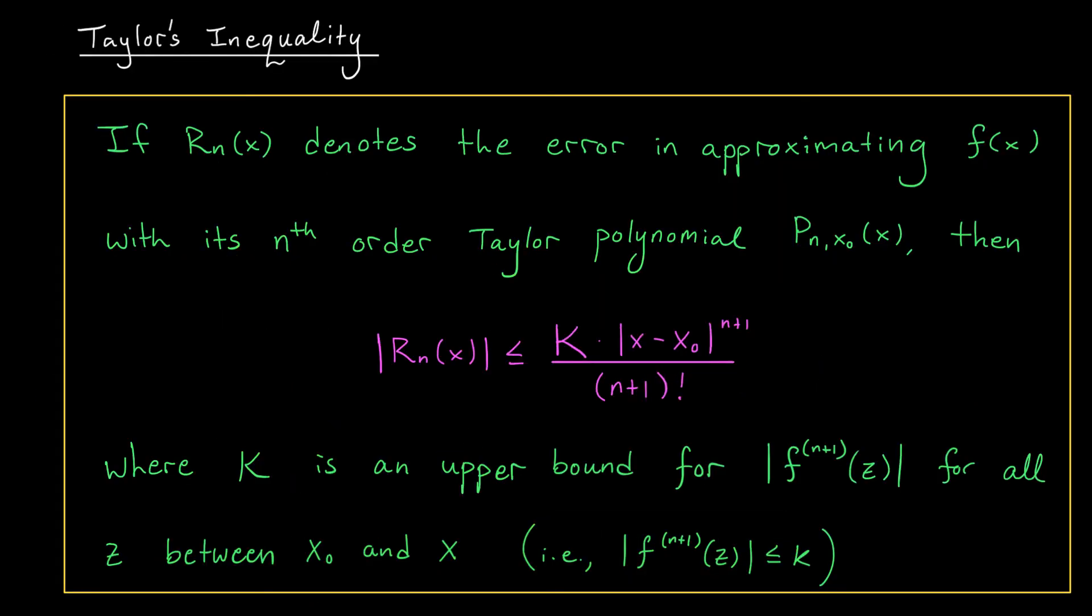All right, here it is, folks, the result we've been building toward for the last couple lessons, Taylor's inequality. It states that if you want to approximate the value of your function f at some point x, and you want to do so using the nth order Taylor polynomial centered at x0, then the magnitude of the error in that approximation is no more than k times the absolute value of (x minus x0)^(n+1) divided by (n+1) factorial.